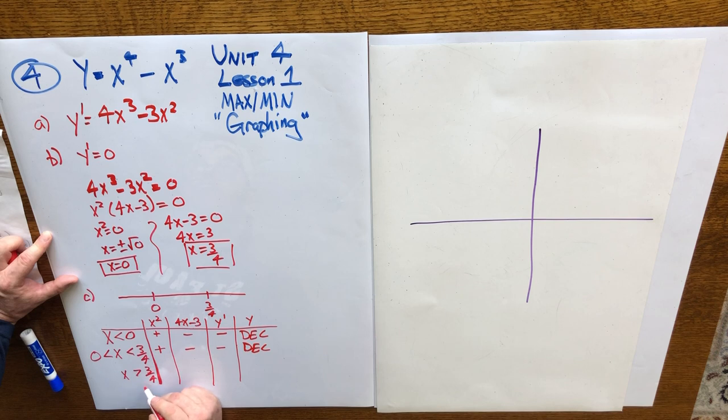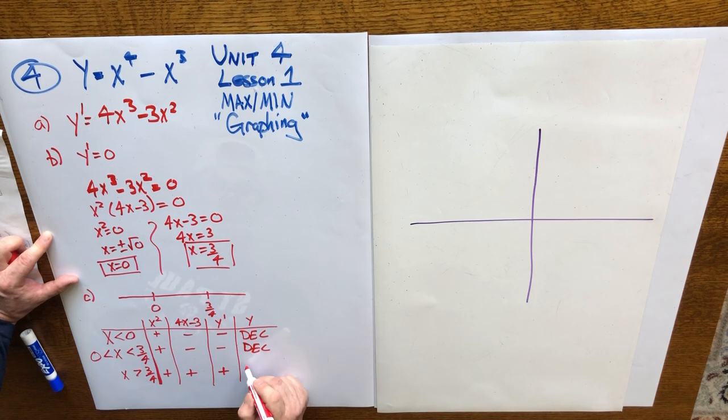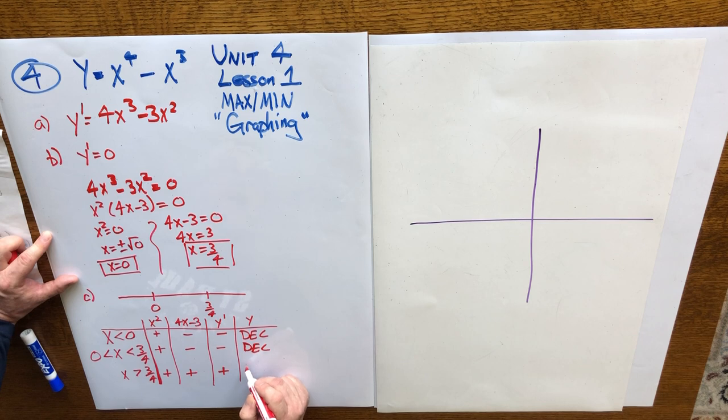But when you pick a number bigger than 3 quarters, like 1 or 2 or 3, when you square it, you get a positive. 4 times 1 squared subtract 3 is a positive. Now you have two positive factors. When you multiply those together, you get a positive for a result. That suggests that the slope is now going up to the right. It's an increasing function.